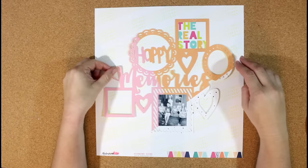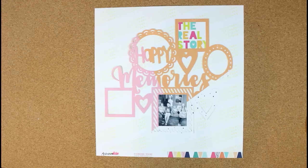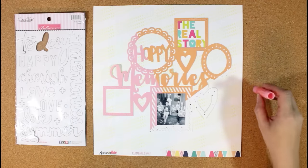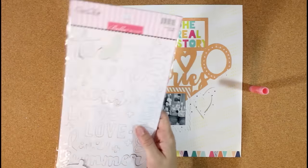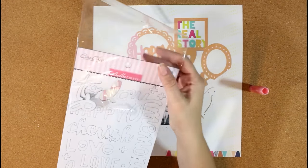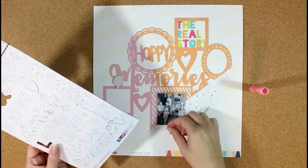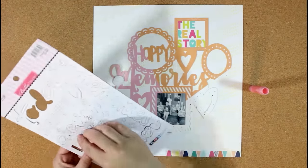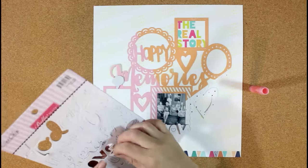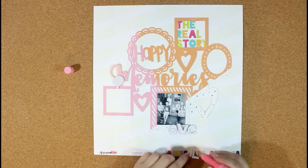I do stitch around all of those frames — I wanted some texture. It may be hard to see here but you can probably see it on the finished layout at the end. I stitched around each of those frames just to add a little bit of texture and to help keep it on the layout.